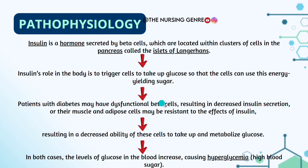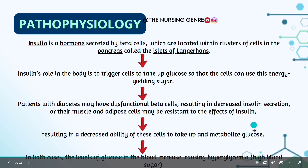Patients with diabetes may have dysfunctional beta cells, resulting in decreased insulin secretion. Or the muscle and adipose cells may be resistant to the effects of insulin. In both cases, the levels of glucose in the blood increase, causing hyperglycemia.